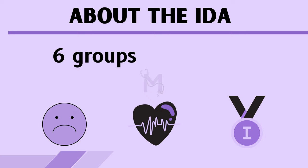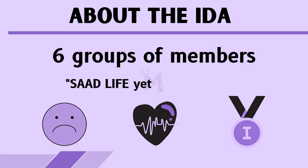There are six groups of members. To remember them, let us use the mnemonic: Sad Life Yet I'm Honored. Let us now use this mnemonic and know each member and their selection criteria.